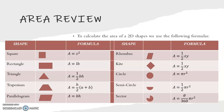For a square we have the formula A equals S squared. For a rectangle we have A equals L times B. For a triangle we have A equals a half B times H. For a trapezium we have A equals H over 2, bracket A plus B. For a parallelogram we have A equals BH. For a rhombus and kite we have the same formula A equals a half X times Y.